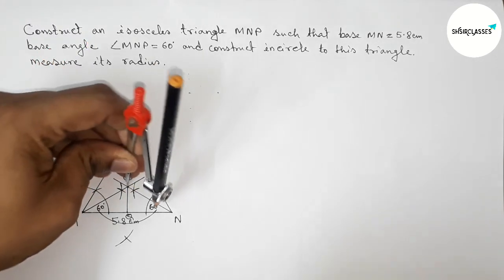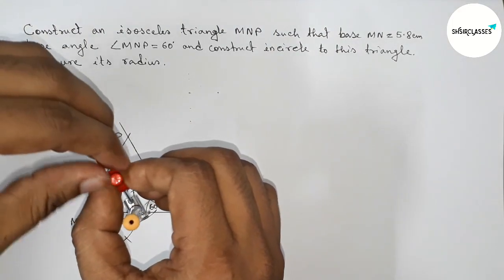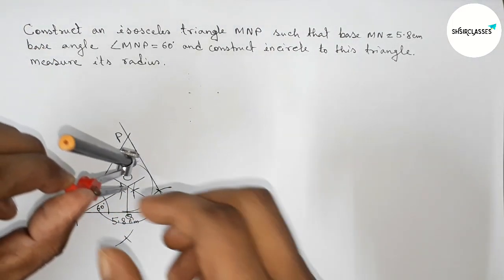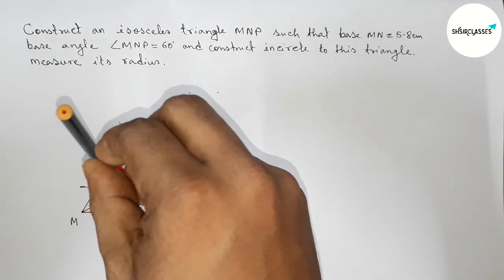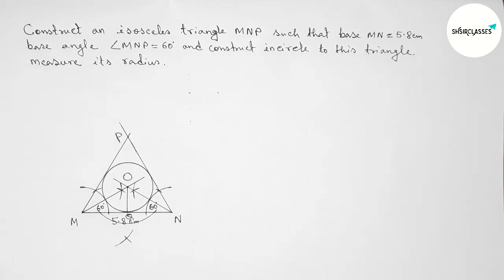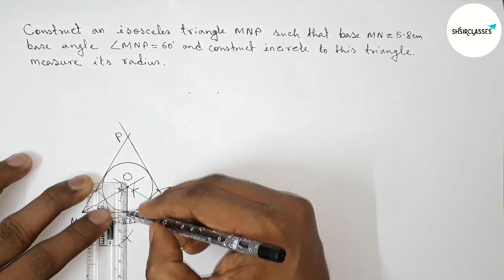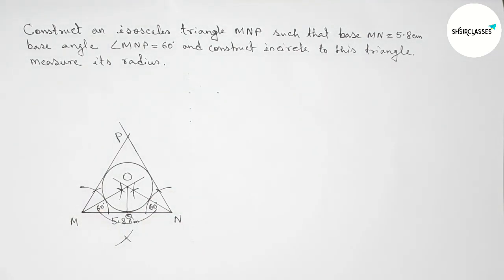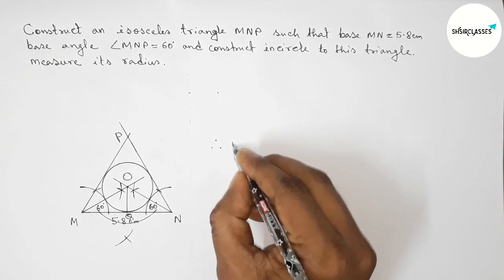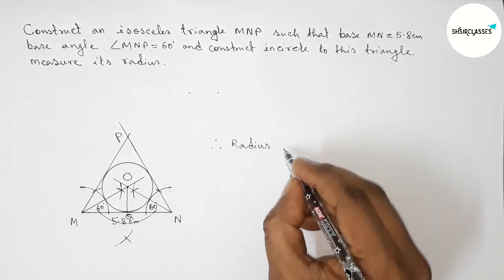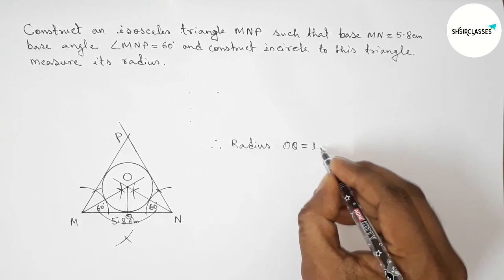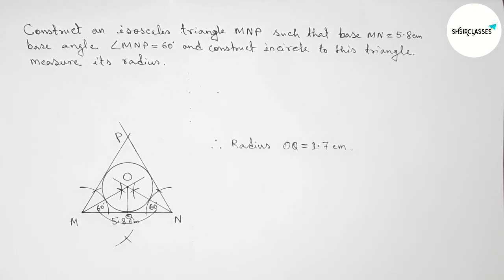Now, with the compass set to length OQ, we draw the incircle of the triangle. This is a perfect incircle to triangle MNP. Measuring the radius, it is approximately 1.7 centimeters. So the radius of the incircle OQ equals 1.7 centimeters.